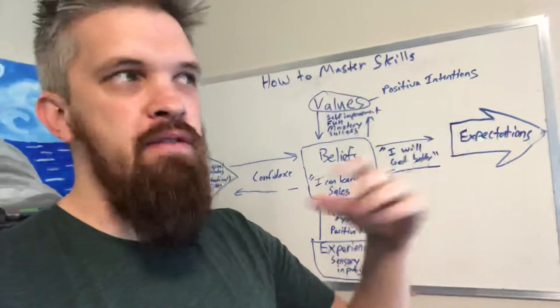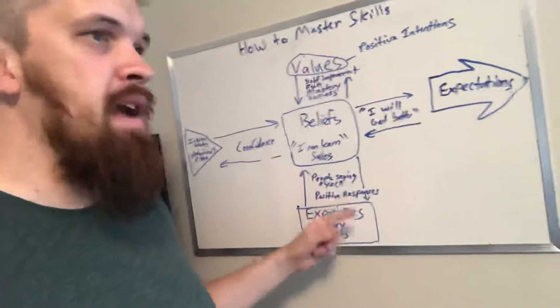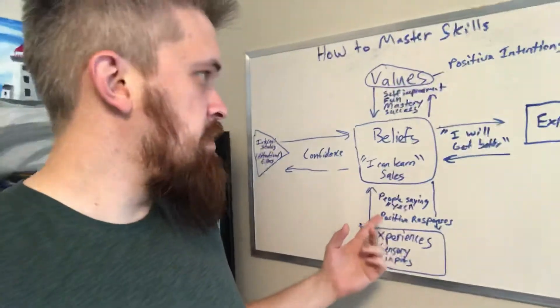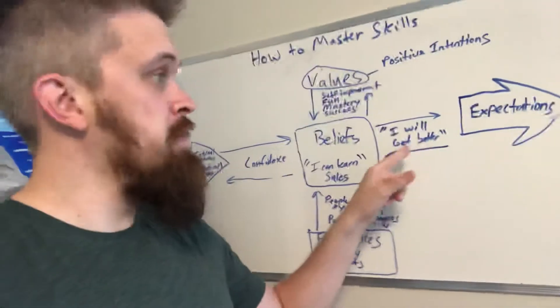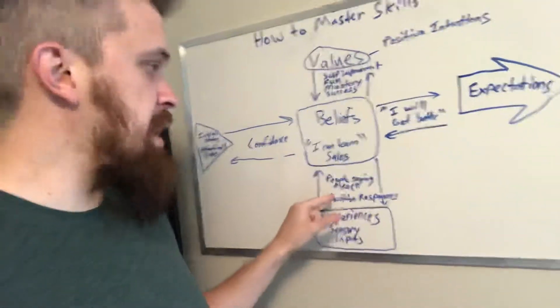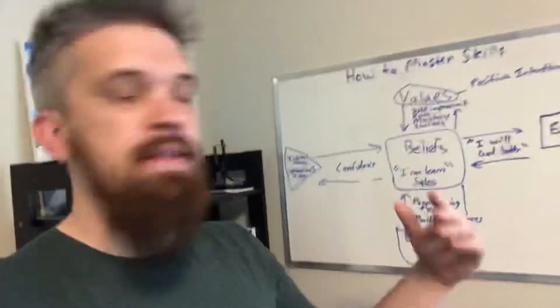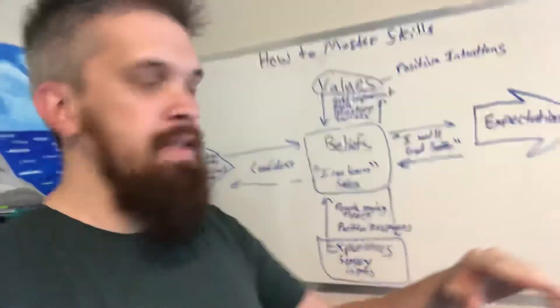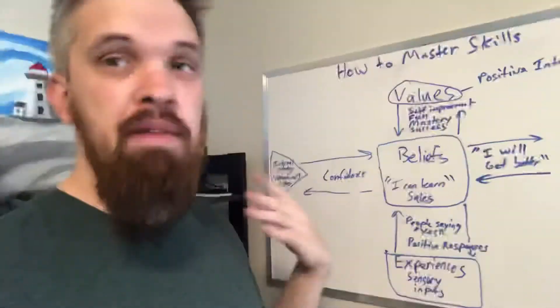Well, if your expectations are negative, you're not going to go and take action, meaning you're not going to get any feedback if you do take action. Let's say you still have the good expectations. Like maybe I can get better. But your beliefs are still off. You do take action. What they also say in NLP is you delete and distort and generalize. So that means you delete all the positive responses and you only focus on the negative. That could be a thing.